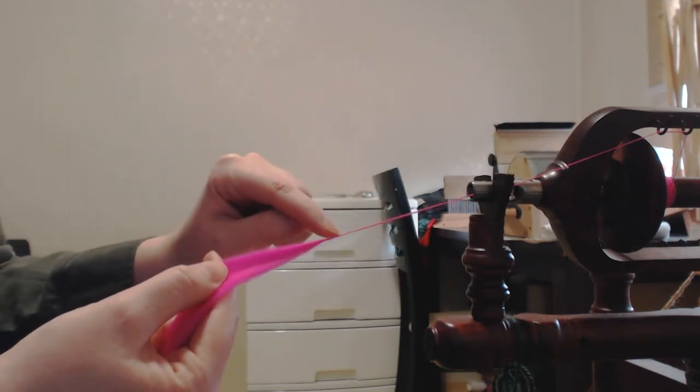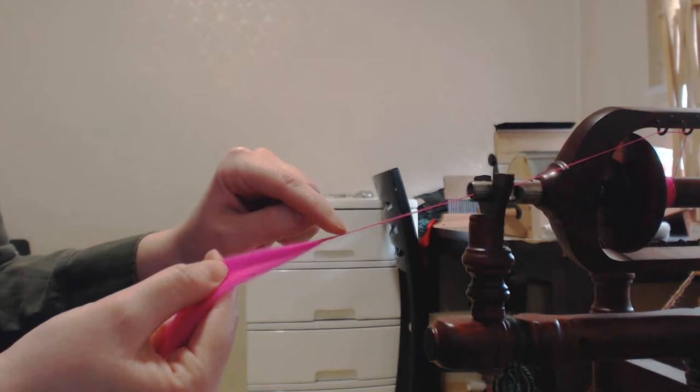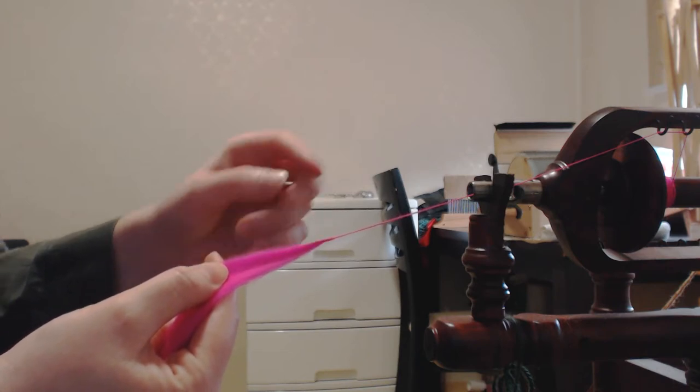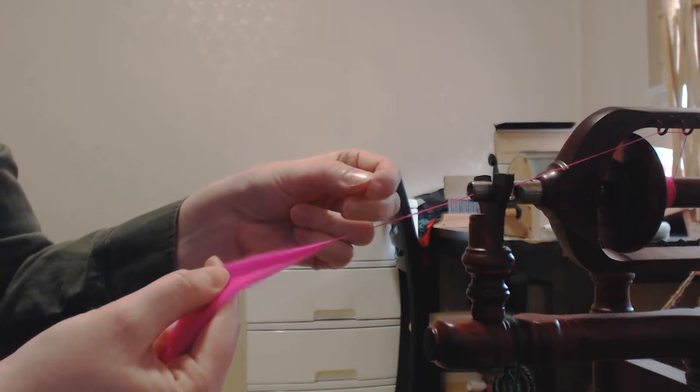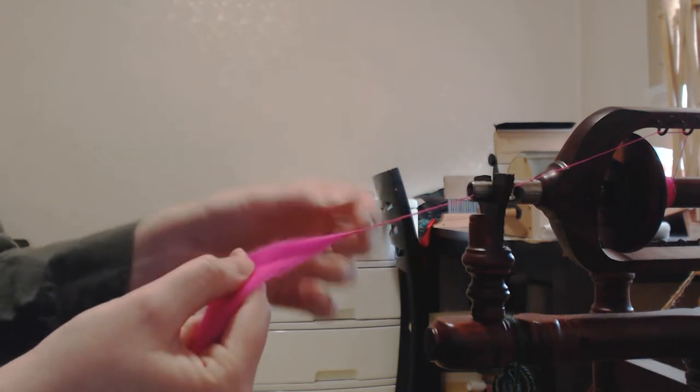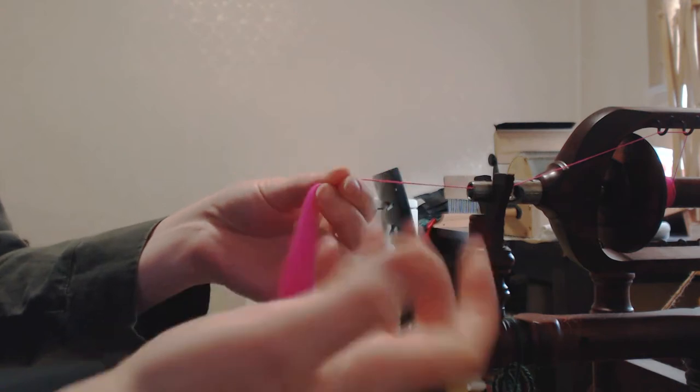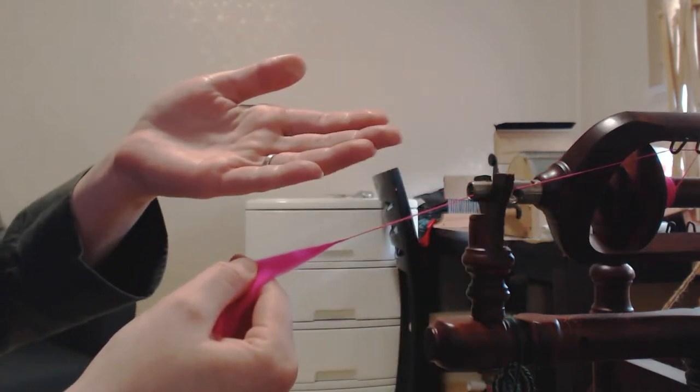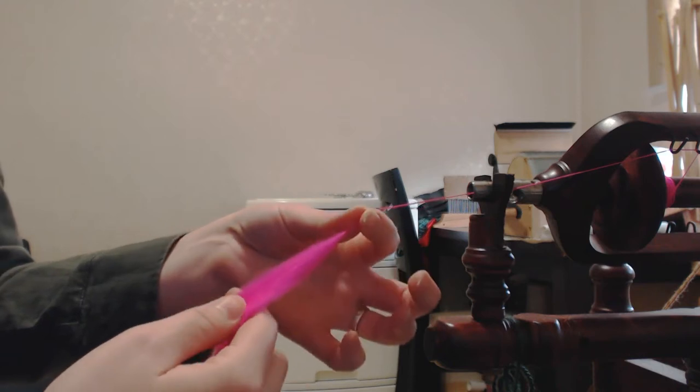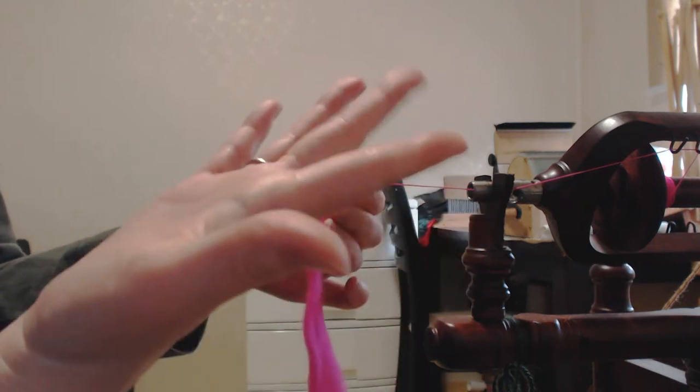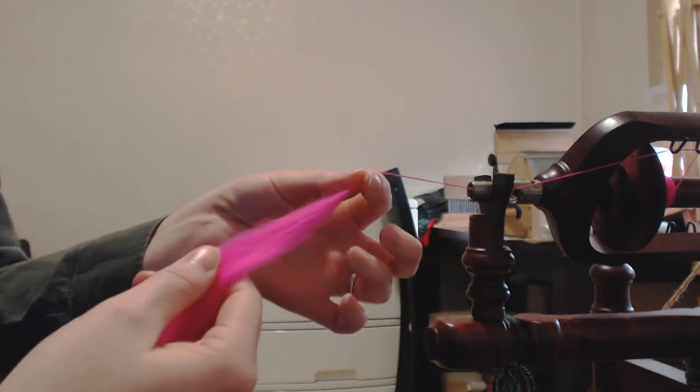And as you can see, it goes from being thin to being thick. So these fingers are kind of feeling that thickness and drafting out as necessary. And this hand is working in conjunction with this hand. This one is doing all of the fine tuning, getting the right thickness. And this hand is doing all of the backward drafting. And I'm controlling how much I'm drafting back based on what the needs are up here for the yarn.